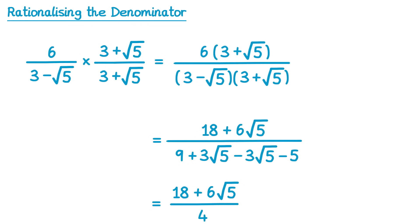The reason this happened was because of our careful choice of what we multiplied by. If you multiply by the same denominator but switch the sign, the surds are always going to cancel out. For this question there's a little bit of simplifying we can do as well. We have 18 over 4 — both even numbers — and we also have the term 6 root 5, and 6 is an even number. So all three terms — 18, 6 root 5, and 4 — have a common factor of 2, so we can halve them. Half of 18 is 9, half of 6 root 5 is 3 root 5 (notice we don't divide the root 5 by 2, just the 6), and then 4 divided by 2 is 2.